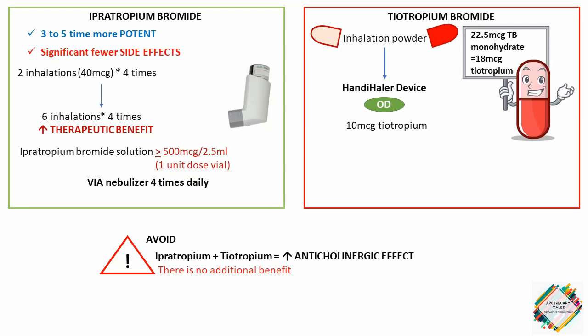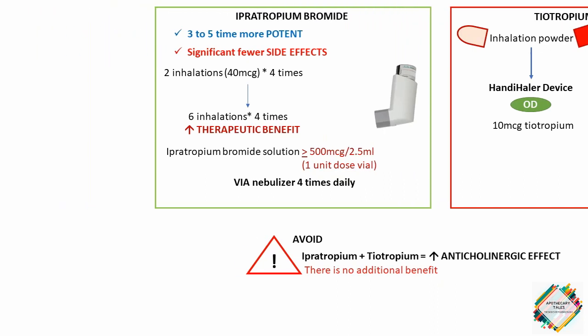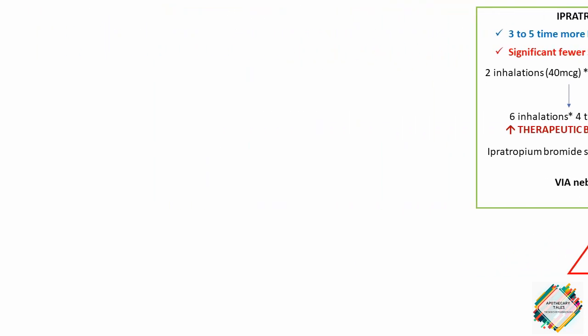For example, if a COPD patient is currently on ipratropium and albuterol combination and tiotropium is started, then the albuterol should be continued as a short-acting bronchodilator and the ipratropium should be discontinued.